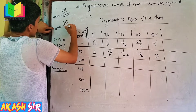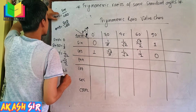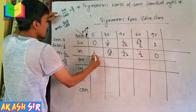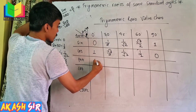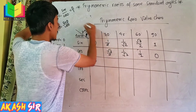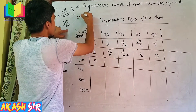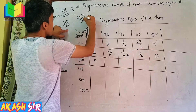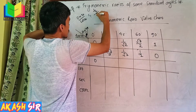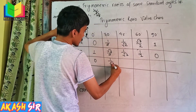The tan value is equal to sin theta by cos theta. If we take the value of tan 0, then sin 0 by cos 0 is 0 by 1, which is 0. If we take tan 30, then sin 30 by cos 30 is 1 by 2 divided by root 3 by 2, which means 1 by root 3.